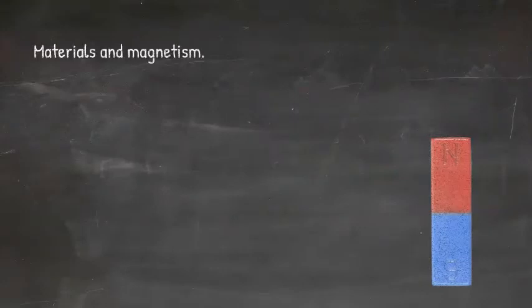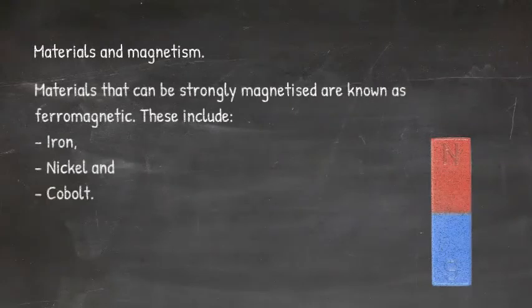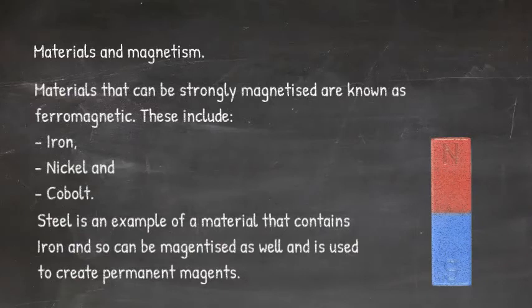So let's take a look at materials and magnetism. Materials that can be strongly magnetised are known as ferromagnetic. These include iron, nickel and cobalt. Steel is an example of a material that contains iron and so can be magnetised as well and is used to create permanent magnets.